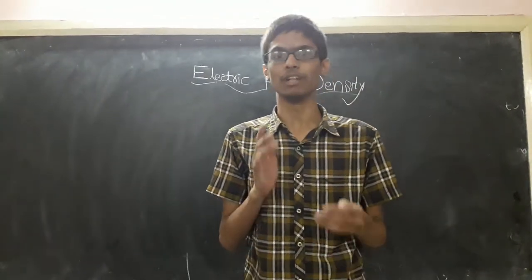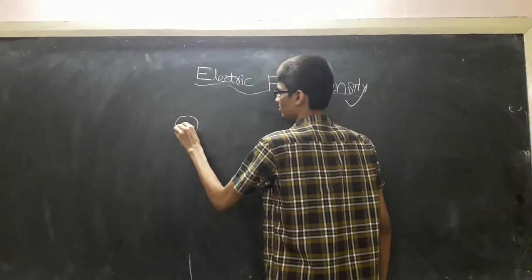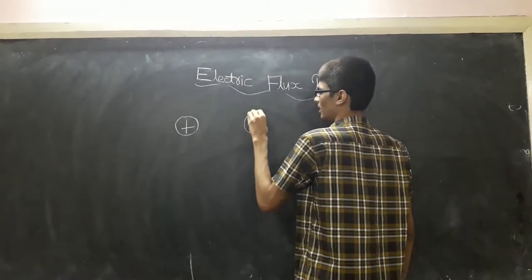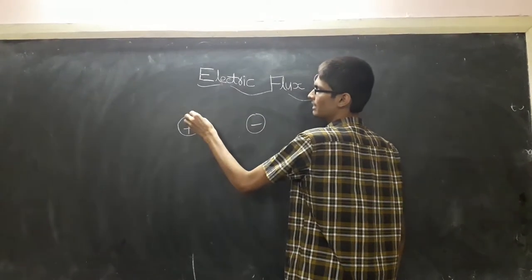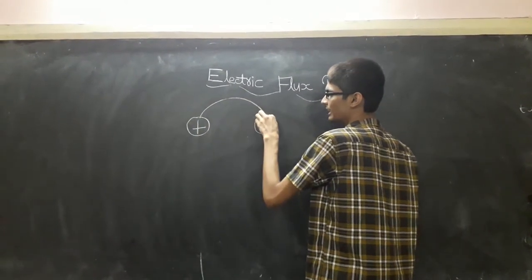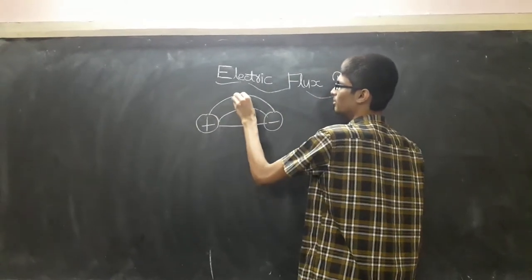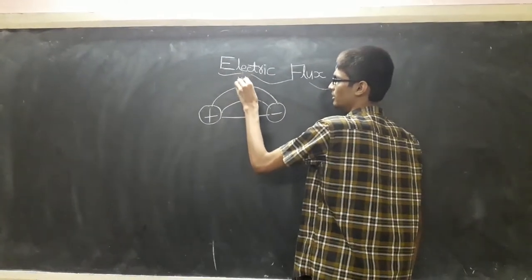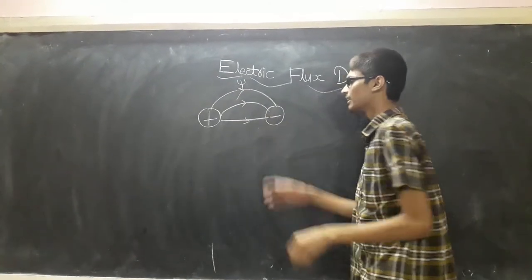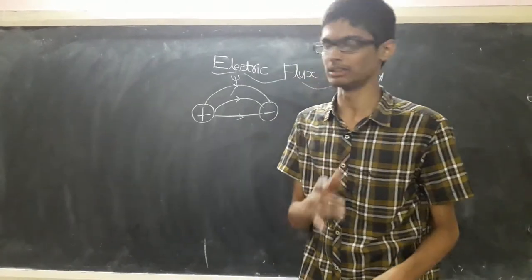First, let us see what is electric flux. Electric flux starts from positive charge and ends with negative charge. Electric flux is denoted by psi. Electric flux terminates from positive charge to negative charge.